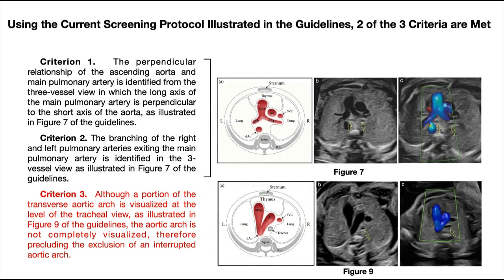Using the current screening protocol illustrated in the guidelines, two of the three criteria are met. Criterion 1: the perpendicular relationship of the ascending aorta and main pulmonary artery is identified from the three-vessel view, in which the long axis of the main pulmonary artery is perpendicular to the short axis of the aorta, as illustrated in Figure 7. Criterion 2: the branching of the right and left pulmonary arteries exiting the main pulmonary artery is identified in the three-vessel view, as illustrated in Figure 7. Criterion 3: although a portion of the transverse aortic arch is visualized at the level of the tracheal view, as illustrated in Figure 9, the aortic arch is not completely visualized, therefore precluding the exclusion of an interrupted aortic arch.